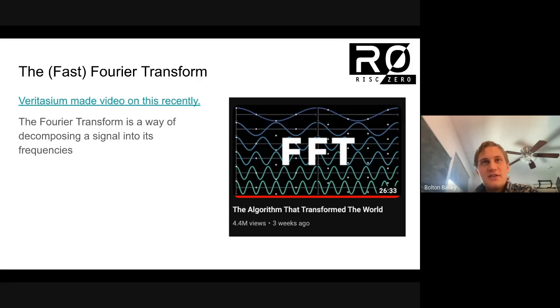The Fourier transform in general is a way of decomposing a function or a signal down into component parts. In the case of the Fourier transform, the traditional Fourier transform, those are these sine waves that you can see here.